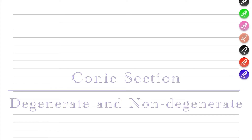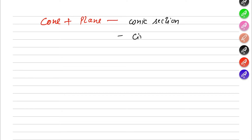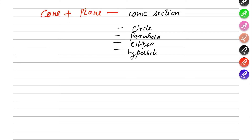Hello guys, so today we will see the intersection of a cone and a plane. We already discussed that the intersection of a cone and a plane is a conic section. The conic sections are the circle, parabola, ellipse, and hyperbola. There is also another type of conic section — the intersection of a cone and a plane — but they are a different type: a point, pair of straight lines, and straight line.